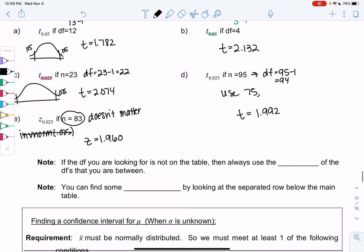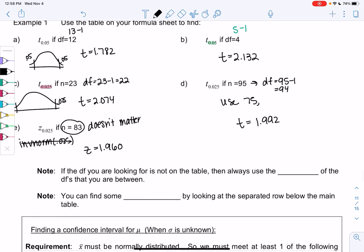Two quick notes. If degrees of freedom you're looking for is not on the table, then you'll always use the lower one in between. The degrees of freedom you're looking for. So don't go over, basically. It's a little outdated, but if anyone's seen the Price is Right, you can't go over. Whoever gets the closest without going over. And then you can find some Z scores at the bottom of the table. It's in that separated row below. And so it's nice, because all the common Z scores are there, so they can be faster to find. So in the next video, we'll put this all together to find confidence intervals.